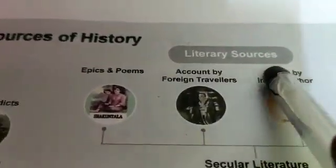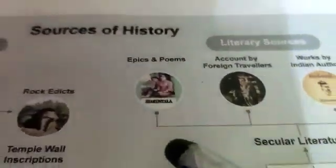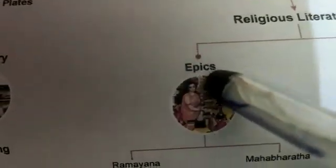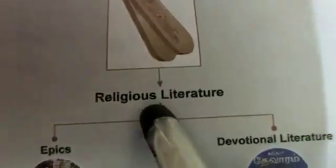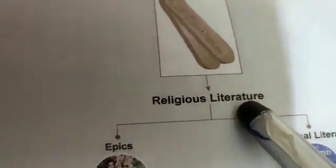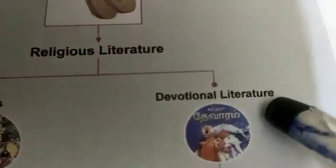We have two types of epics — one is Ramayana and another one is Mahabharatam. Ramayana and Mahabharatam are religious literature, also called devotional literature.